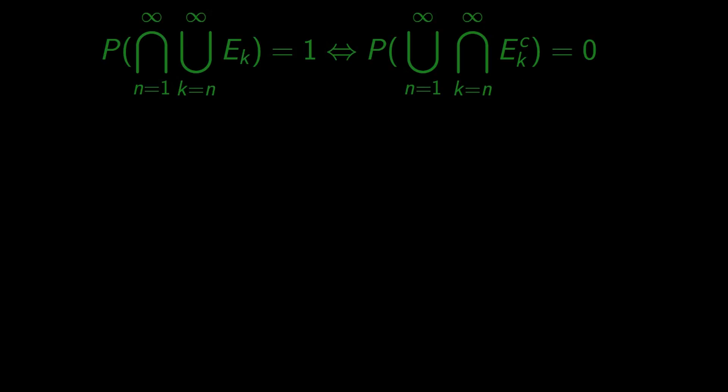Let's arbitrarily choose number n and see what is the probability that all trials beyond it are unsuccessful. Now we will use our first assumption that all the trials are independent.